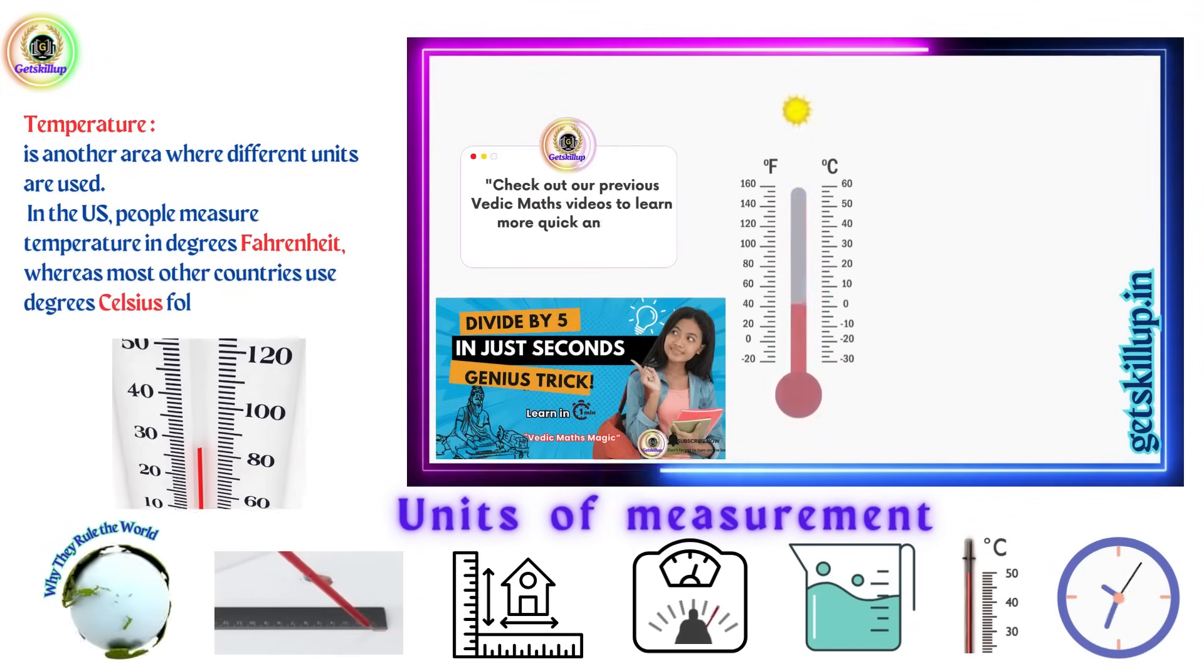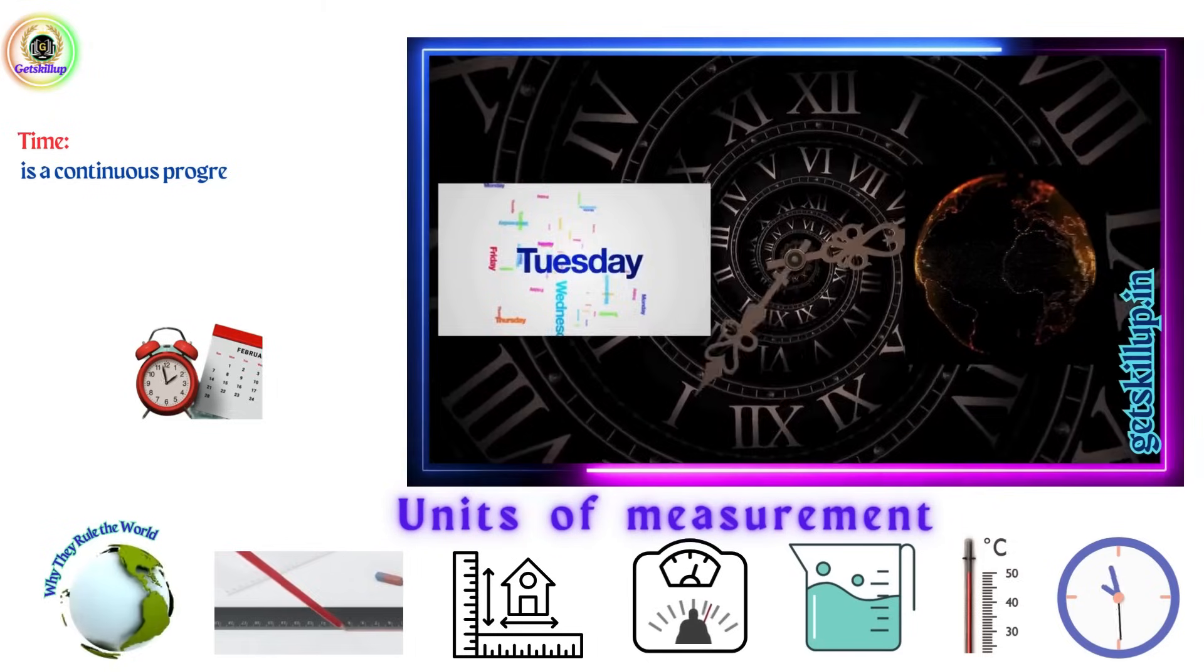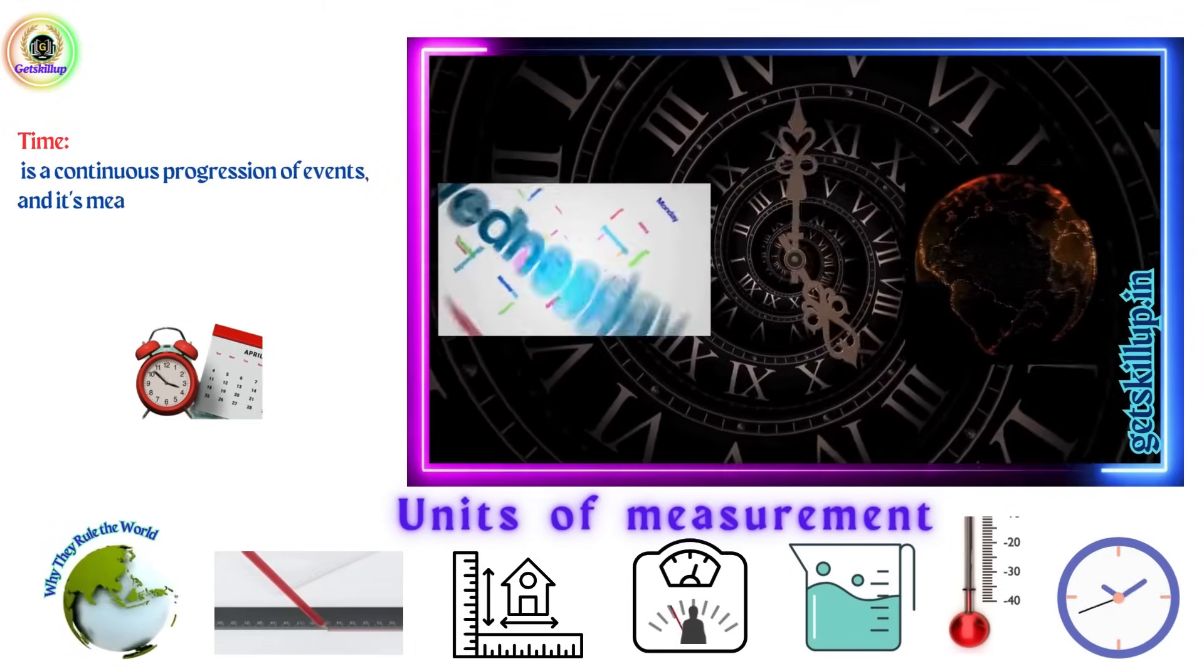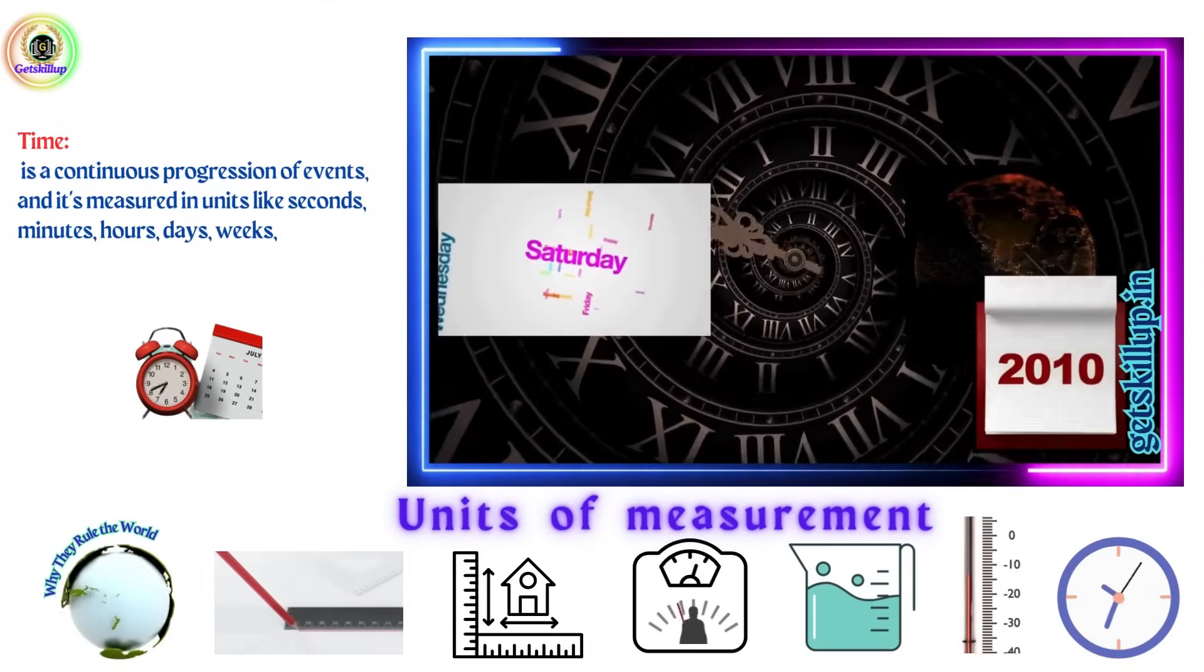But there's one measurement unit that's the same worldwide: time. Time is a continuous progression of events, and it's measured in units like seconds, minutes, hours, days, weeks, and years across all systems.